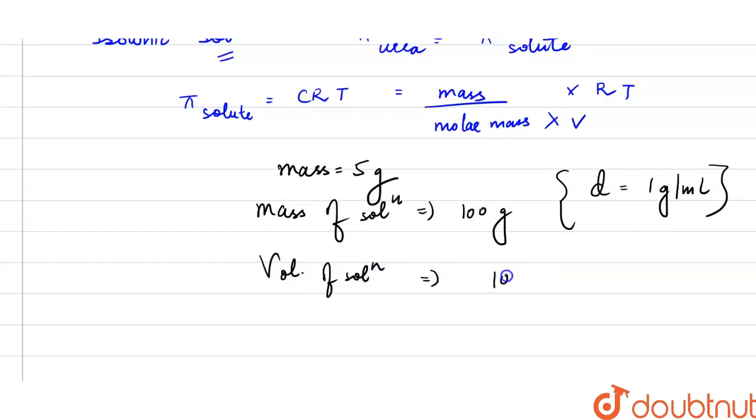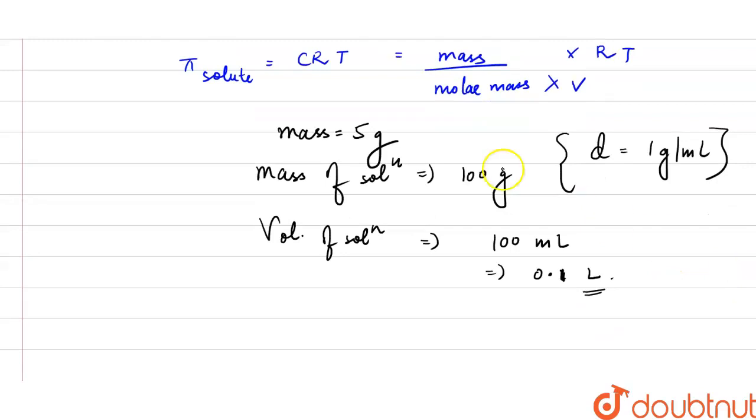The volume of the solution would be 100 ml and 100 ml means 0.1 liter. So we can write this expression as: what is the mass? Mass is 5 gram divided by the molar mass, molar mass we need to calculate, multiplied with the volume 0.1 liter into RT.